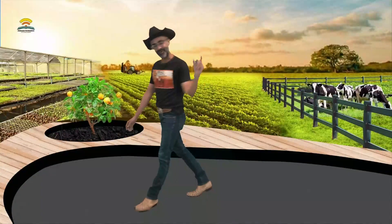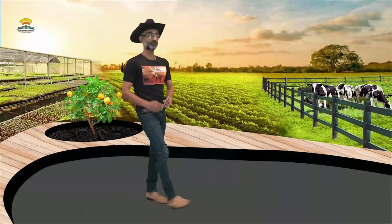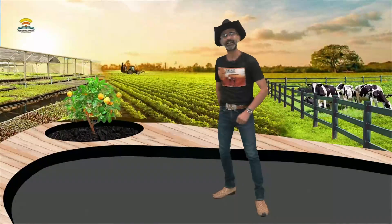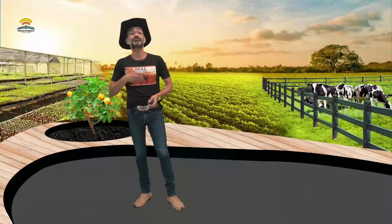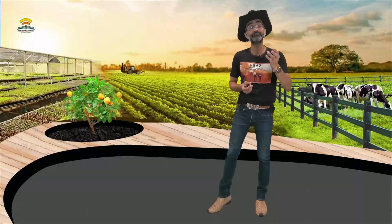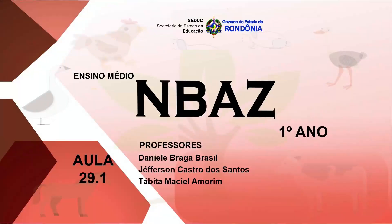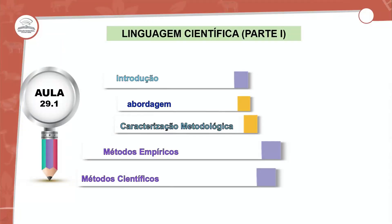Muito bem, meus queridos, retornamos com mais uma aula. Hoje nós vamos falar sobre as linguagens científicas. Existem formas de você escrever um texto científico, então as linguagens são diversas. Tem a linguagem jornalística, tem a linguagem de história, uma forma discursiva. Então nós vamos ver quais são as várias formas de linguagem. Aula 29.1 — nós vamos ter a primeira parte sobre linguagens científicas, com uma introdução e abordagem do que se trata uma linguagem científica.